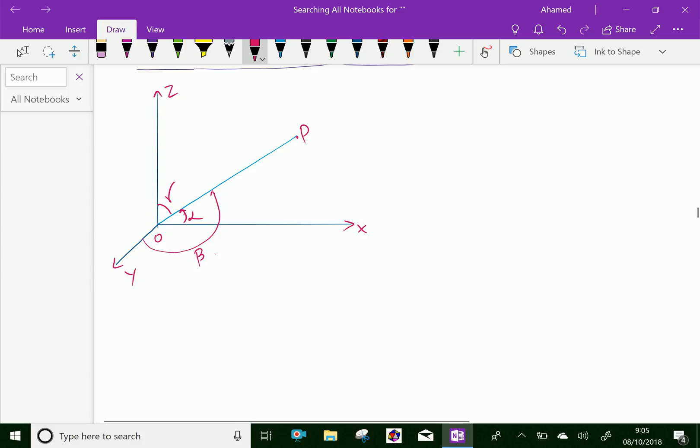Now, if alpha, beta, gamma are angles with a directed line,